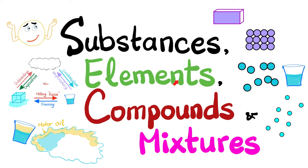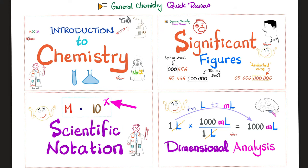But what if we combine two elements physically, not chemically? Then you get a mixture rather than a compound. And by the way, the mixture will not have new chemical properties. Instead, these elements will retain their old chemical properties.